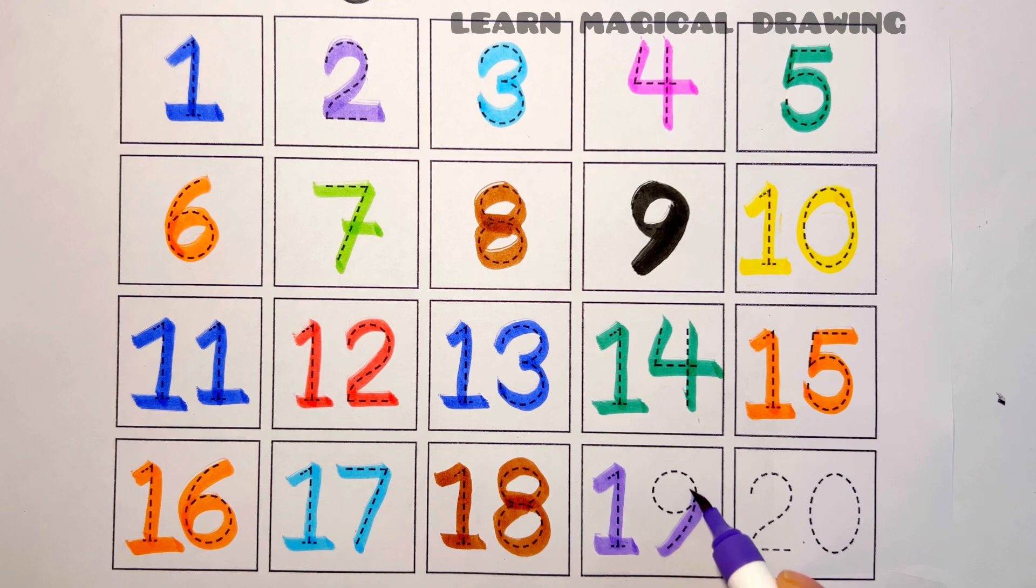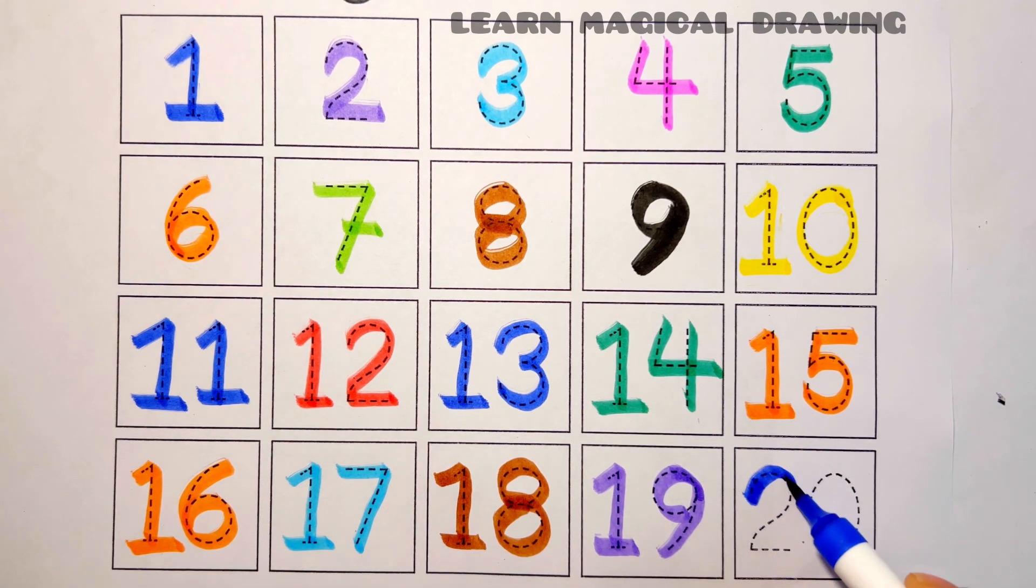Purple color, 1, 9, 19. Blue color, 2, 0, 20. Read again.